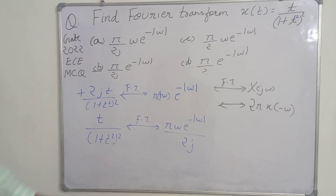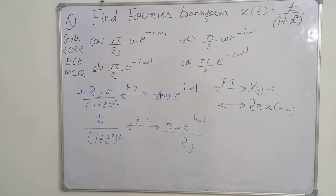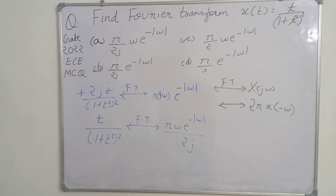Looking at the options, option A is correct. In this way we can easily solve this question just by using the right properties: first the formula for e^(-a|t|), then the differentiation-in-frequency-domain property, and finally the duality property.